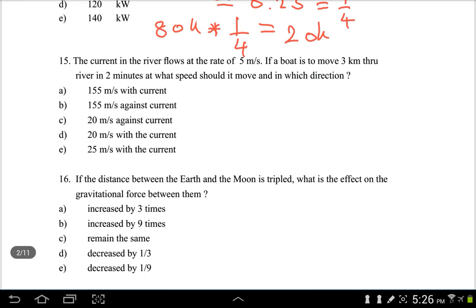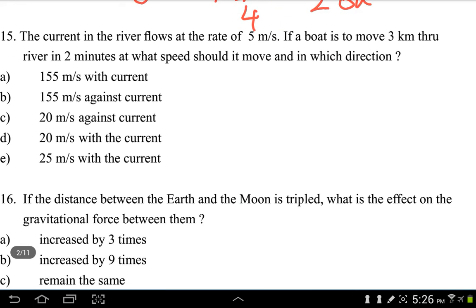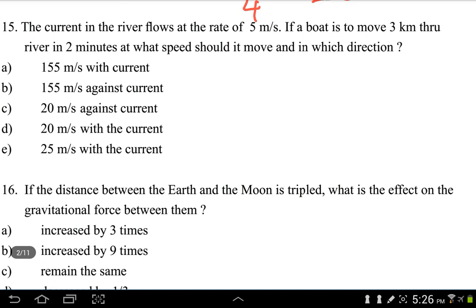Alright, number 15. Number 15 says the current in the river flows at the rate of 5 meters per second. The boat is to move 3 kilometers through the river in two minutes. The question says what speed should the boat be moving and in which direction? Now when you see a question like this, first draw it out.